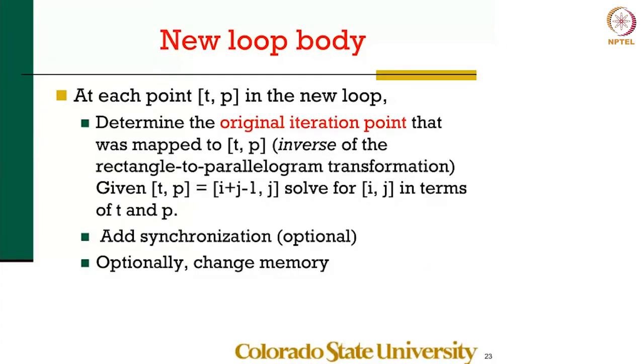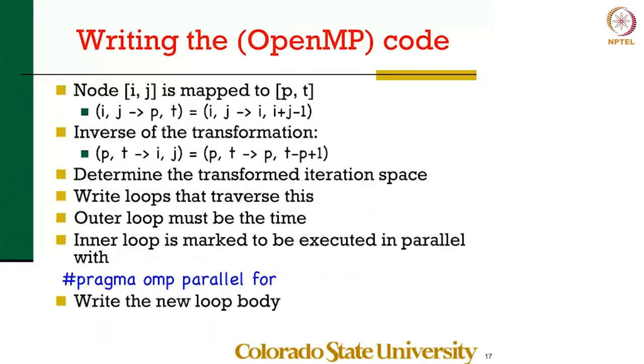I did an example on the doc cam, but I don't have that right now. I have to talk to you and explain to you one final thing. You now have a loop that visits this new space T and P, but you don't know what the loop body is. And once again, this part of the problem uses the inverse. I'm going to show this to you again pictorially.